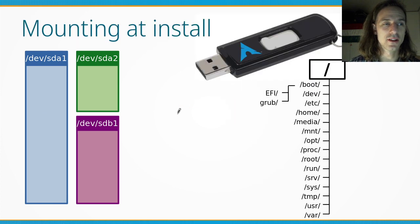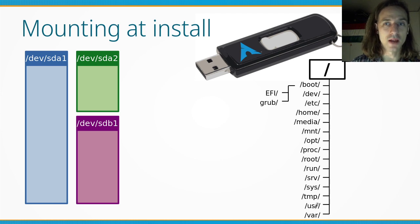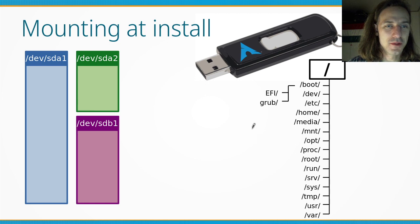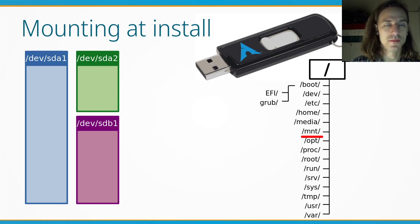During the installation procedure, we have the Arch Linux live environment, which is either on a USB key or a virtual CD-ROM if you are using a virtual machine. The live environment already has its own file system mounted. We need our new empty partitions to also be mounted so that we can actually copy files onto them for the installation. If you look around the file system, there is the /mnt directory in the root directory.